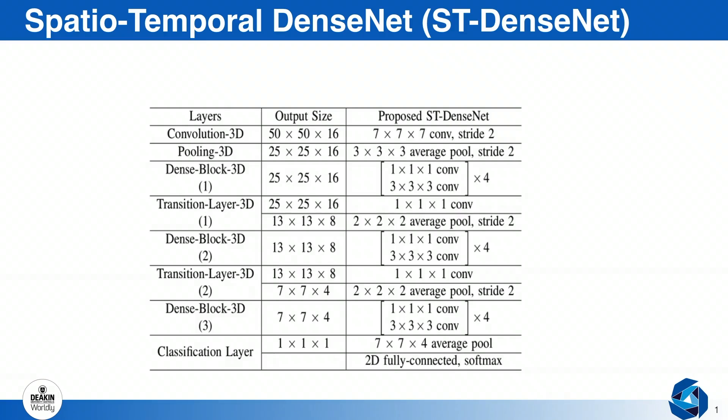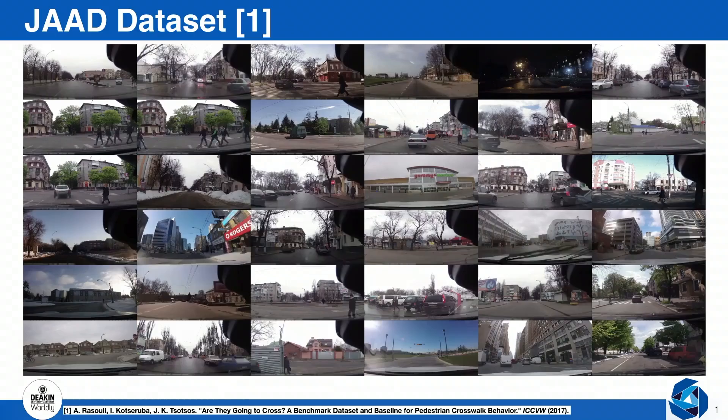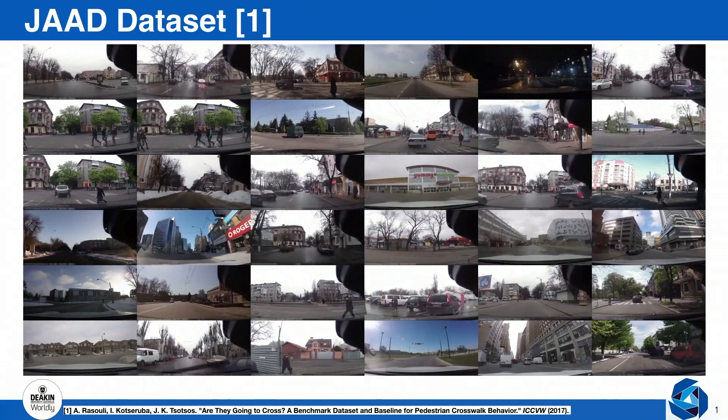Here we look in more detail into our spatiotemporal DenseNet, which we refer to as the ST-DenseNet architecture. Our proposed architecture consists of three main 3D dense blocks interleaved with 3D transition layers. Unlike the 2D kernel filters found in the conventional DenseNet architecture, our ST-DenseNet architecture contains 3D kernel filters, which help us in modeling the input image sequences both spatially and temporally.